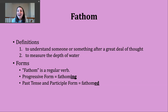You should know that fathom is a regular verb. To make the progressive tense, all we're going to do is add -ing to form 'fathoming.' The past tense and participle forms are made by adding -ed. Our base verb, fathom, ends with a voiced M sound, so our past tense ending is just going to make a D sound — we're not adding an extra syllable. It should sound like this: 'fathomed.'